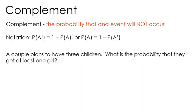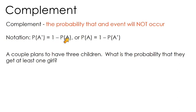Now let's introduce the complement: the probability that an event will not occur. The notation for 'not A happening' is P(A prime). The complement of A can be found by doing one minus the probability of A. For example, if A is flipping heads — probability 0.5 — then A prime is flipping tails, and one minus 0.5 gives 0.5. The probability of something happening plus the probability of it not happening equals one.